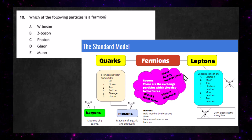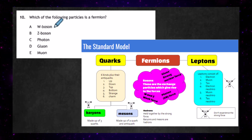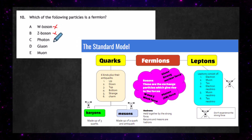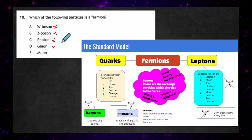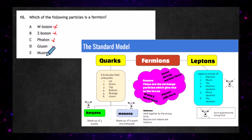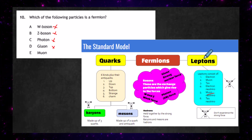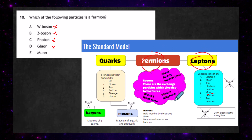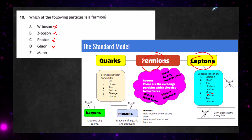If we have a boson — a force-carrying particle — it's not a member of the fermion family. So we can go down the list and cross off any boson: W boson, Z boson, photon (the force carrier for the electromagnetic force), and gluon (the force carrier for the strong nuclear force). We're left with the muon, which is a lepton and a sub-family of the fermions. The answer is E: the muon.